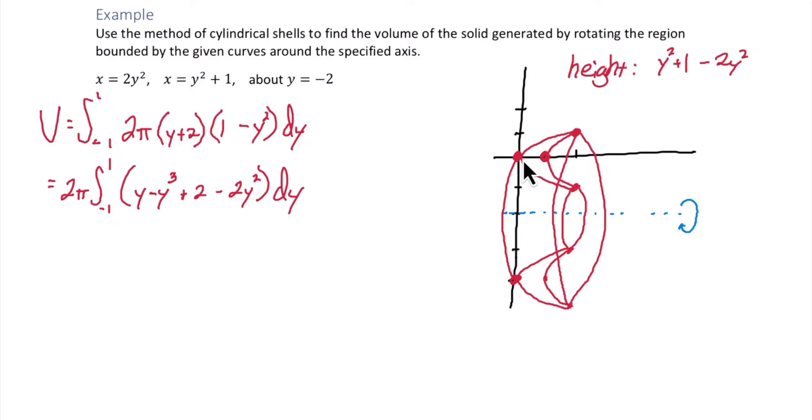If we want, we can rewrite that to put it in descending order. We have negative y cubed minus 2y squared plus y plus 2.